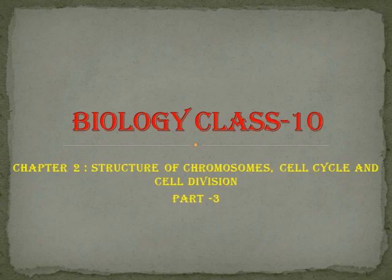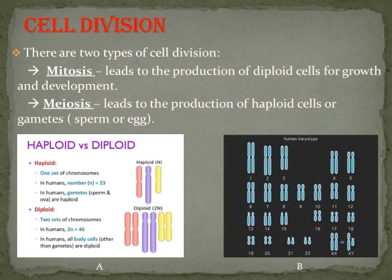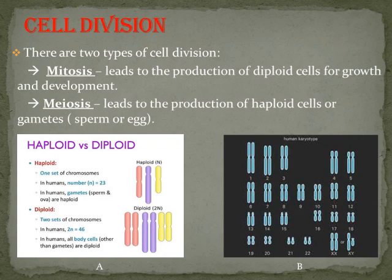After the second growth phase, the cell undergoes the dividing phase — mitosis. The division phase means the cell is already prepared; all materials required for division are present. There are two main types of cell division in eukaryotes: mitosis and meiosis.